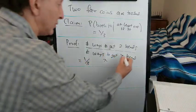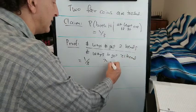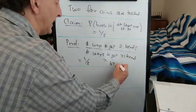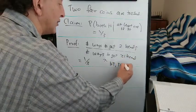The number of ways to get at least one head is we've got H, T, T, H, and H, H.